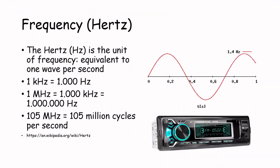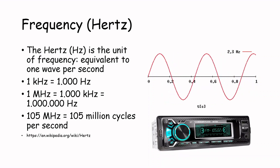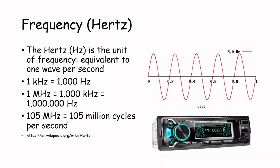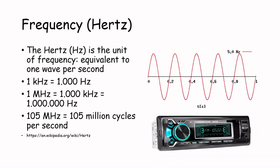Well, hertz is the unit of frequency. Frequency measures the number of waves in a given time period. One hertz is equivalent to one wave per second, as you can see on the animation. 1 kilohertz equals 1000 hertz, 1 megahertz equals 1000 kilohertz or 1 million hertz. 105 megahertz, in our example by the way, equals 105 million waves per second.